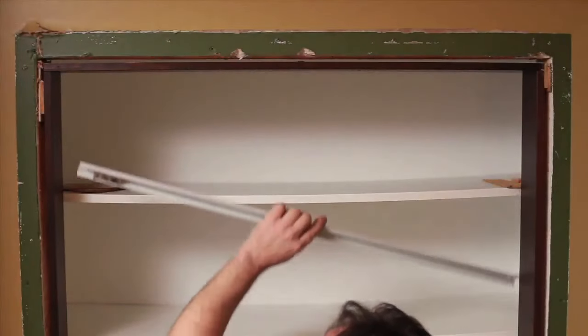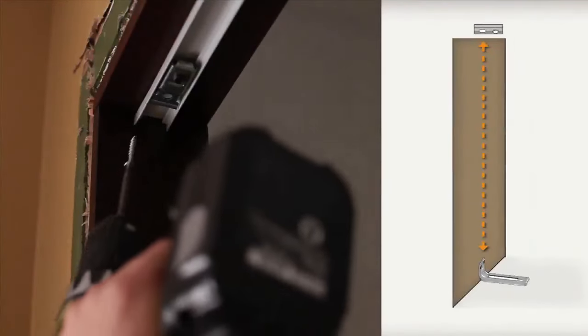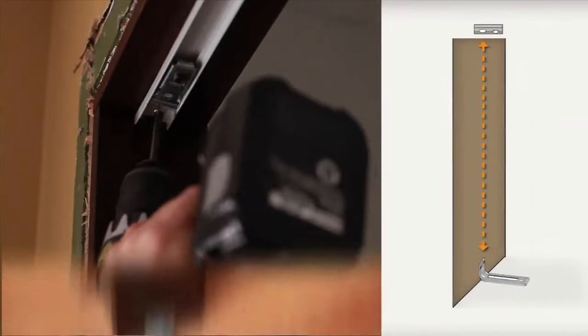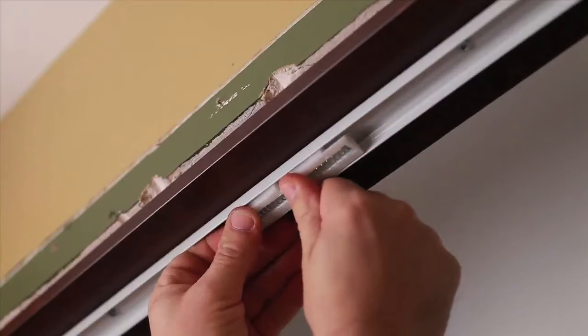Afterwards, insert and fasten track to the top frame using the one and a half inch (3.8 centimeter) button head screws. Make sure the top pivot hinge support is perfectly aligned with the anchor of the adjustable pivot hinge. Then, push the sliding guide into the track.